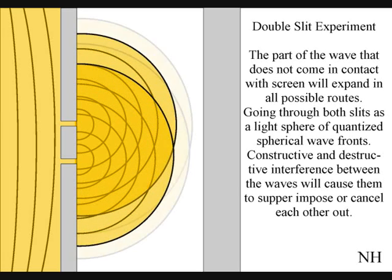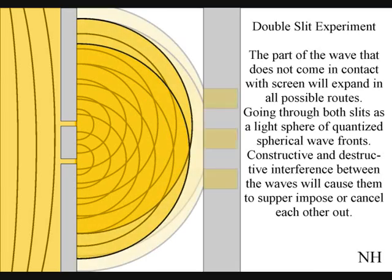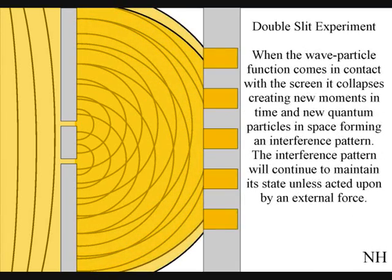Constructive and destructive interference between the waves will cause them to superimpose or cancel each other out. When this wave-particle function comes in contact with the screen, it will collapse creating moments of time and quantum particles in the shape of an interference pattern.